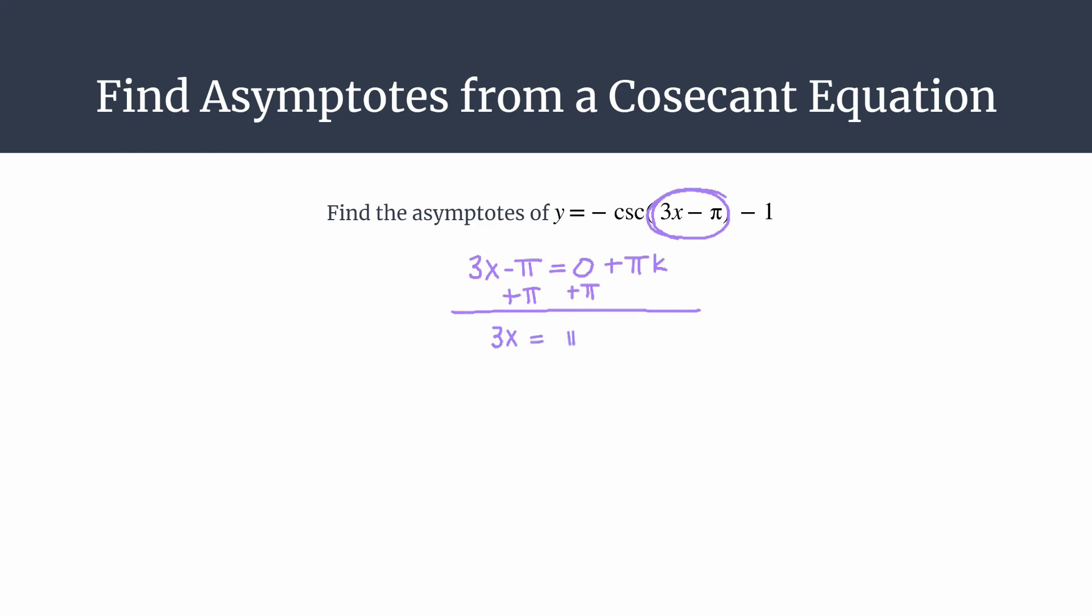On the right we have pi plus pi k. Now we can solve for x by dividing both sides of the equation by 3. Just make sure you divide all your terms by 3. So your final equation to generate all your asymptotes for this graph will be x equals pi over 3 plus pi over 3k.